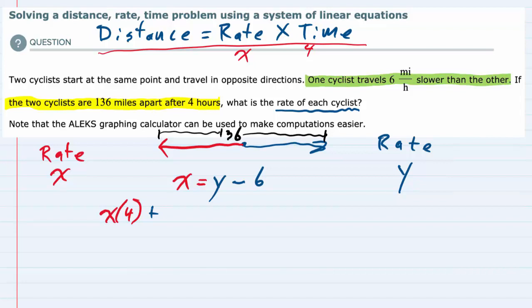And if we add to that the distance that the other cyclist has gone, now he's traveling at y miles per hour, but also it's been 4 hours. So he has gone y times 4 miles. Then the total distance that they are now apart, so if we add the distance that the red cyclist went to the distance that the blue cyclist went, they have gone a total of 136 miles.